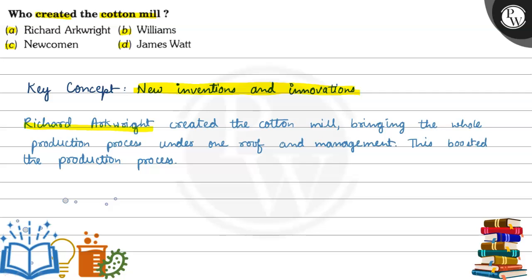Let's see the answer. Richard Ockroyd created the cotton mill, bringing the whole production process under one roof and management. This boosted production process. Richard Ockroyd.